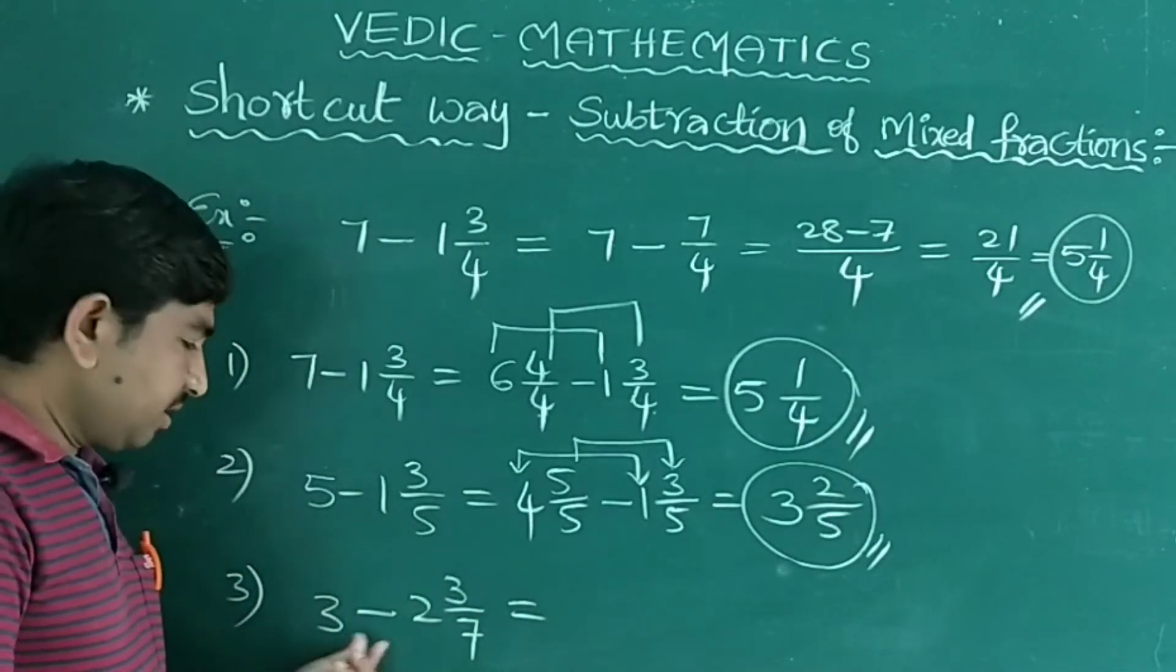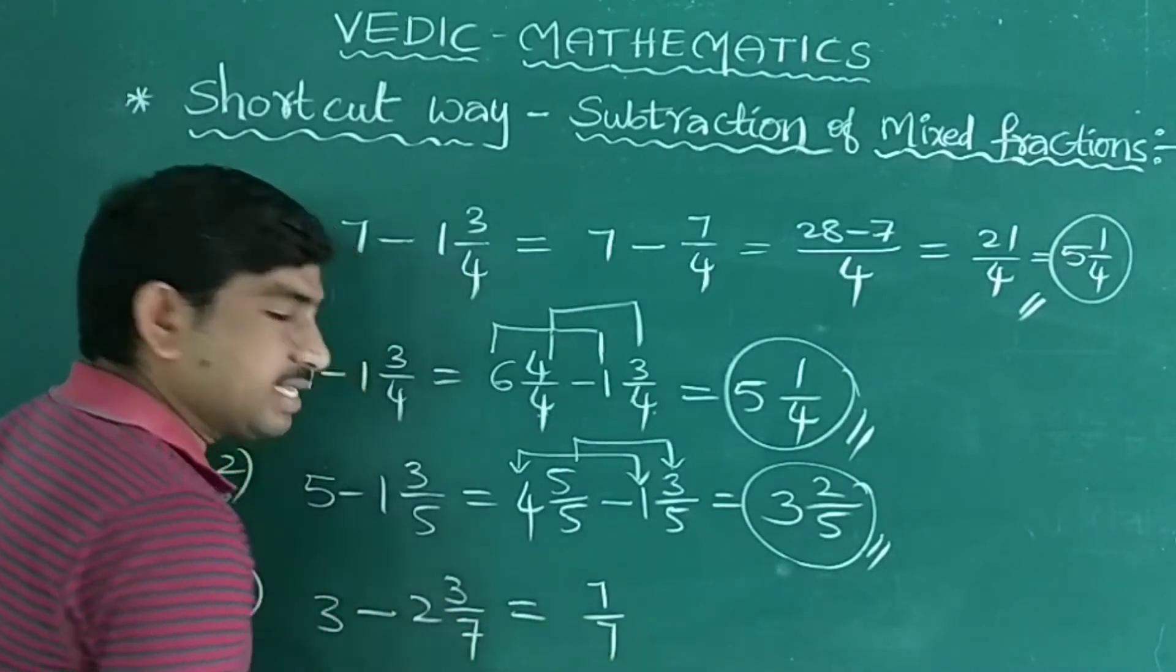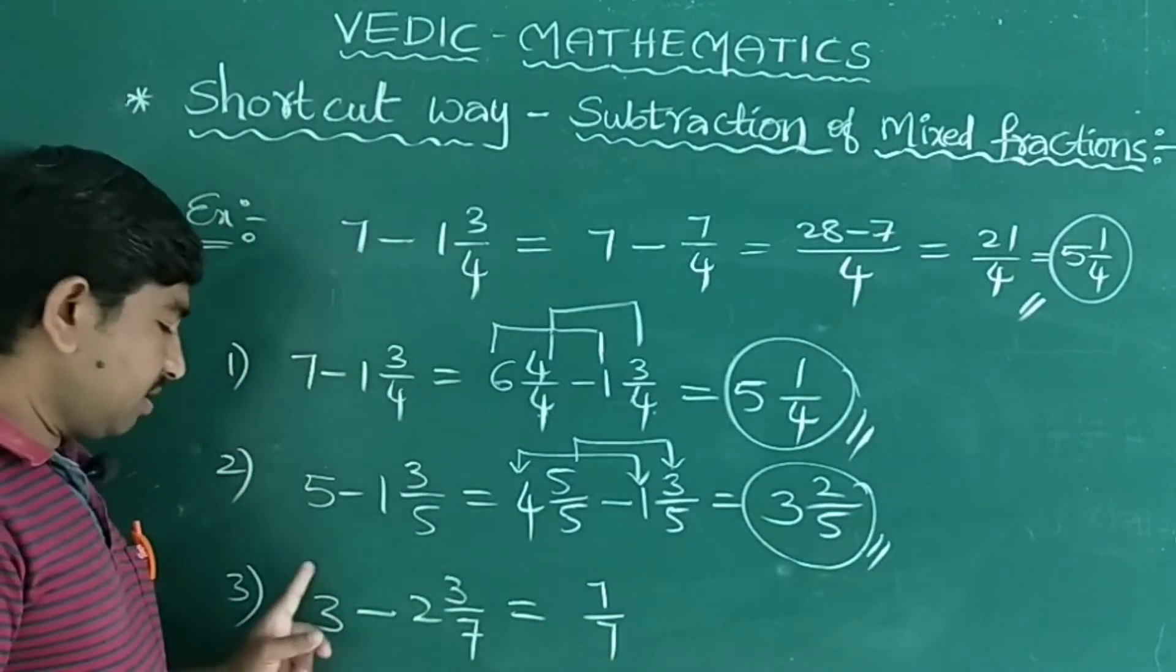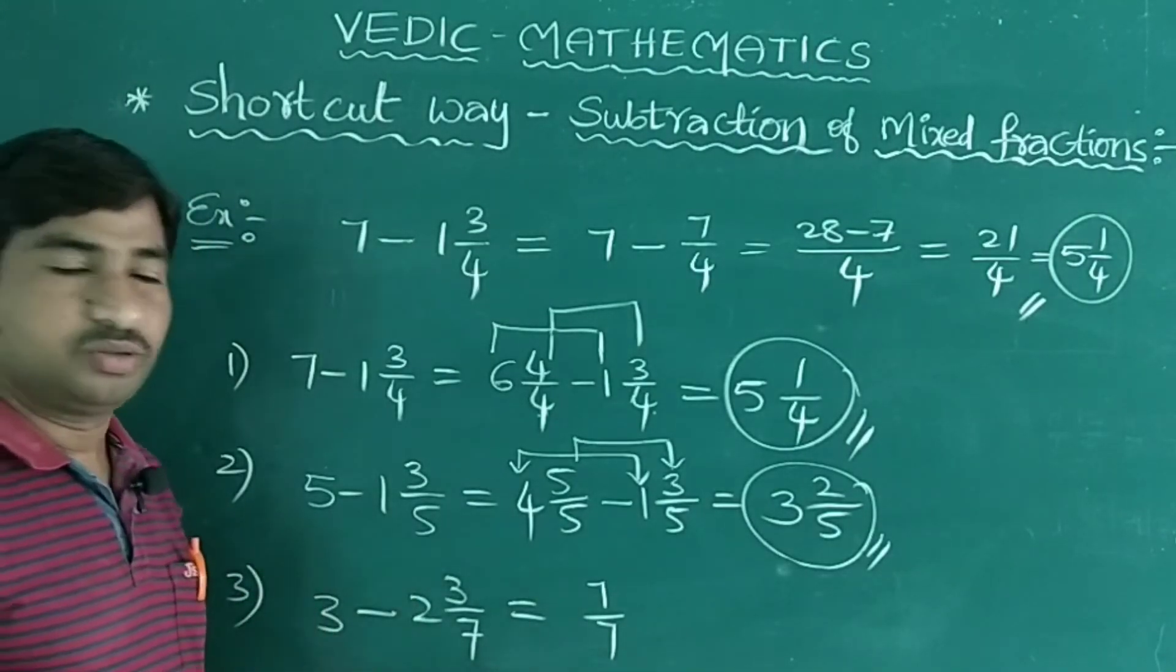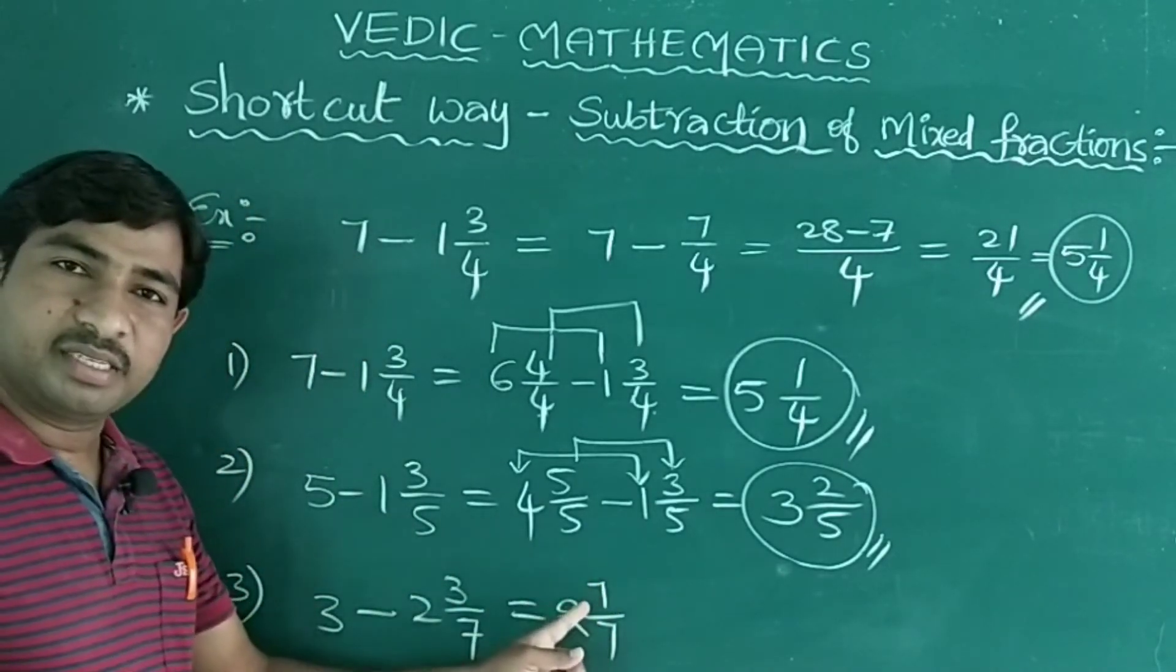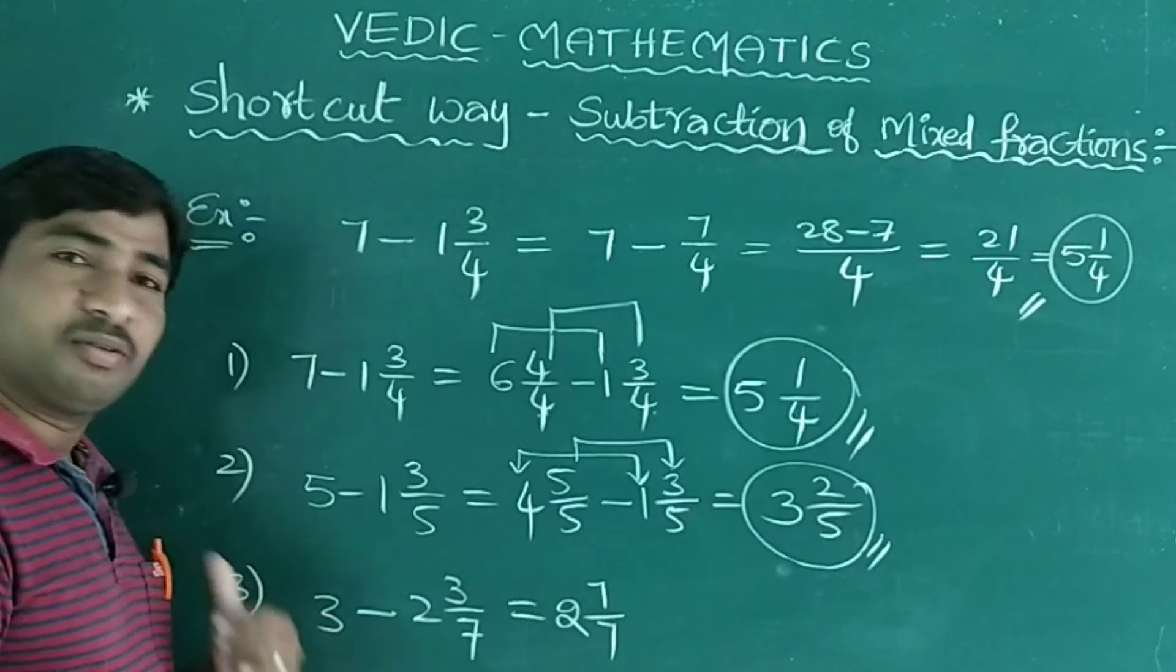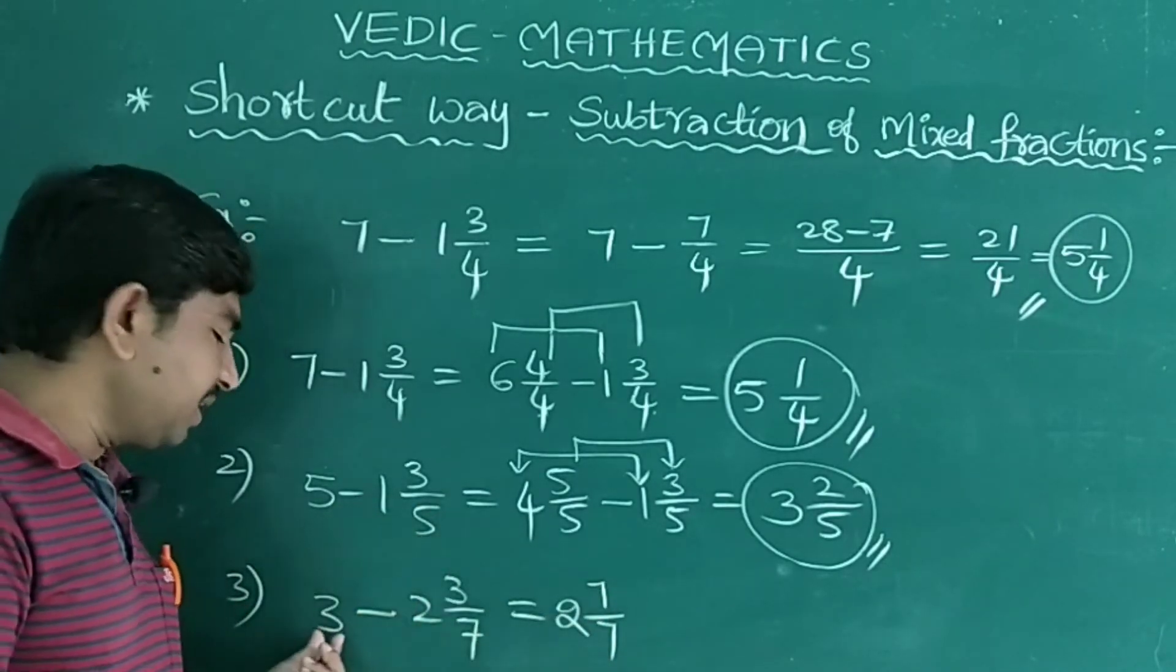This 3, what is the denominator here? 7. So first write this as 7/7 as it is. Now what is the nearest number less than 3? 1 less than 3 is 2. That you can write here. Now by converting this into the improper fraction, what you will get? 3 only. 7 times 2 is 14, 14 plus 7 is 21. 21 by 7 means 3 only.